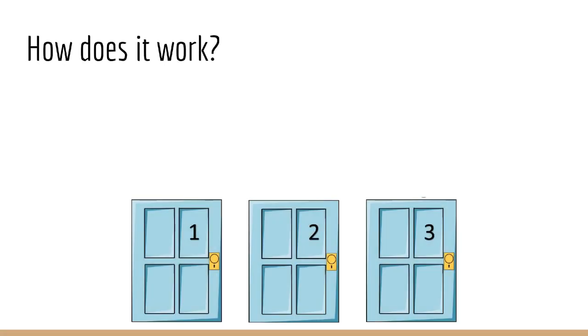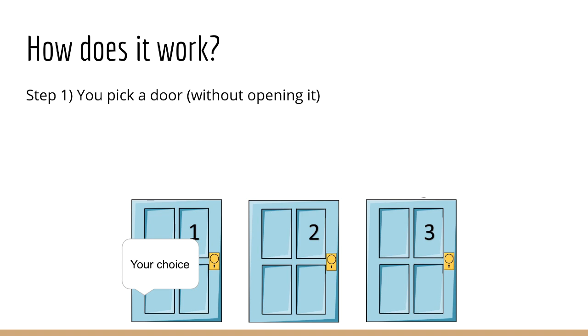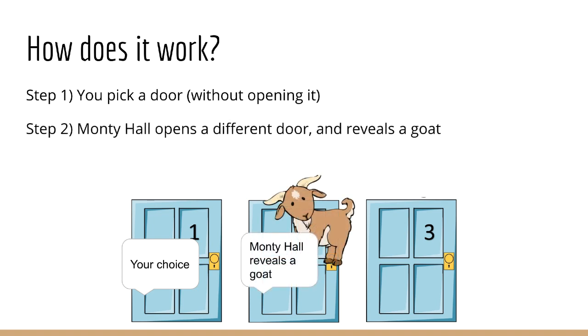So how does this game work? Well it goes like this. You pick a door, but you do not get to see what is behind it. Without loss of generality, let's say you pick door number one. Next, the host, who knows what is behind each of the doors, opens one of the doors you did not choose, and he must always reveal one of the goats. Let's say he opens door number two, and it's a goat.